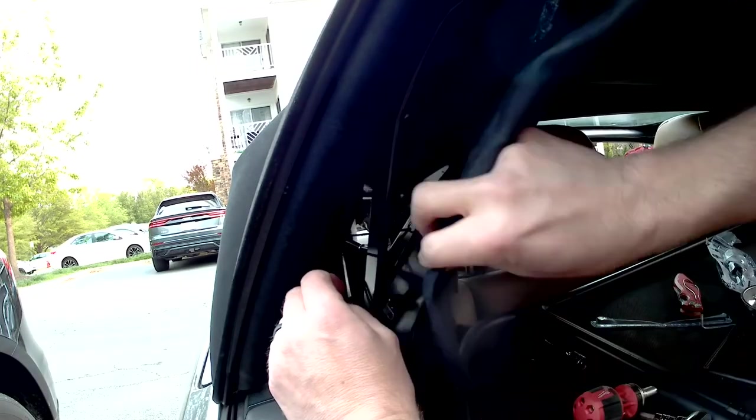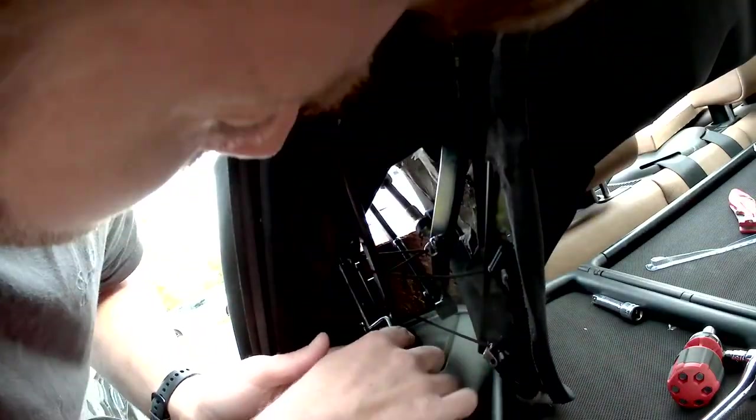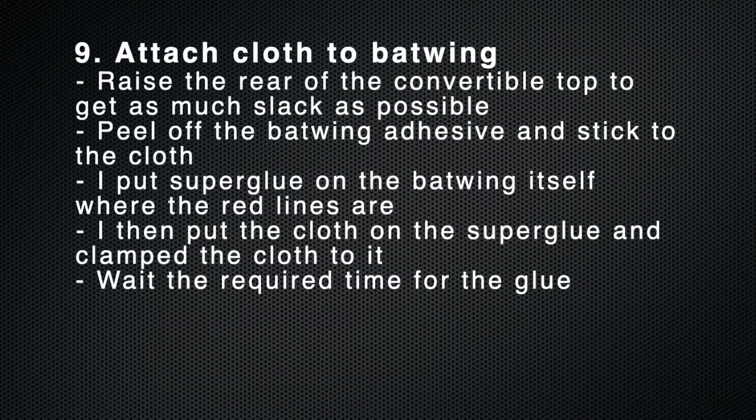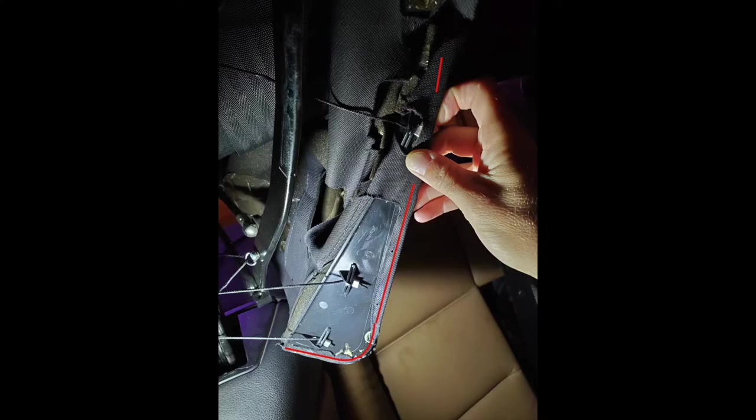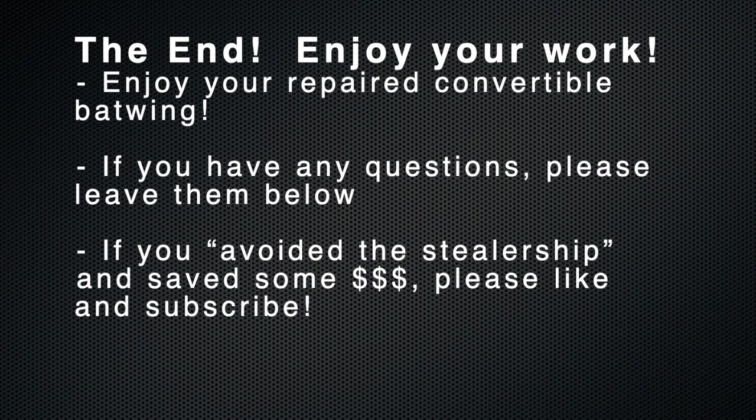If you find that the batwing is getting especially tight as you do this, raise the rear of the convertible top to give yourself more room. The last step is to attach the cloth from the top to the batwing itself. Raise the rear of the convertible top to get as much slack as possible. Peel off the batwing adhesive and stick it to the cloth. I also put super glue on the red areas and then clamped it down and that worked very well.